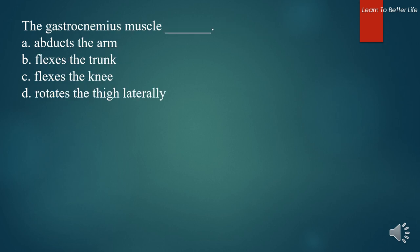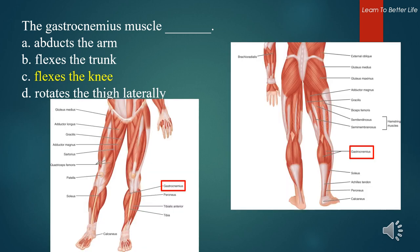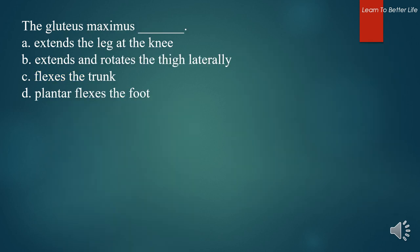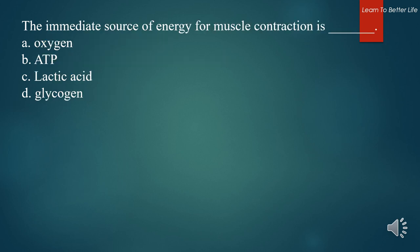The gastrocnemius muscle. A. Abducts the arm. B. Flexes the trunk. C. Flexes the knee. D. Rotates the thigh laterally. The answer is C. Flexes the knee. The gluteus maximus. A. Extends the leg at the knee. B. Extends and rotates the thigh laterally. C. Flexes the trunk. D. Plantar flexes the foot. The answer is B. Extends and rotates the thigh laterally.